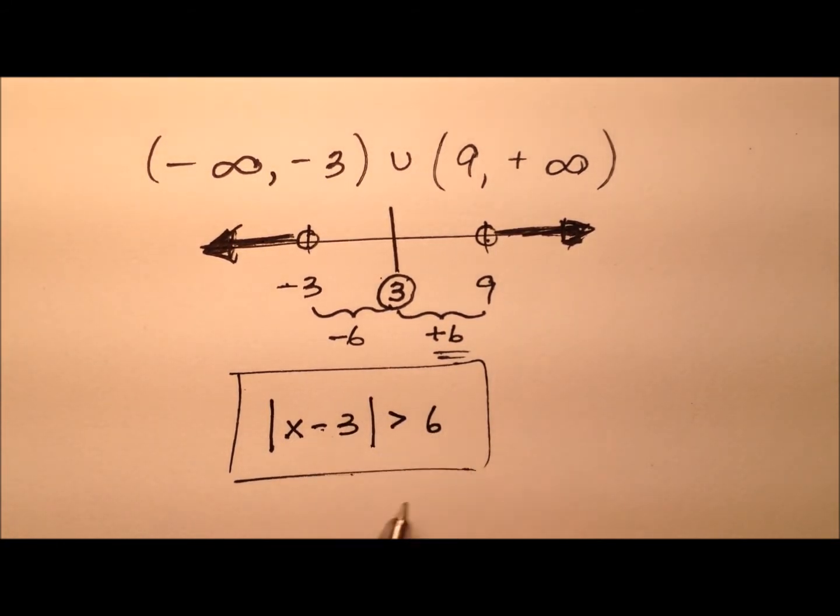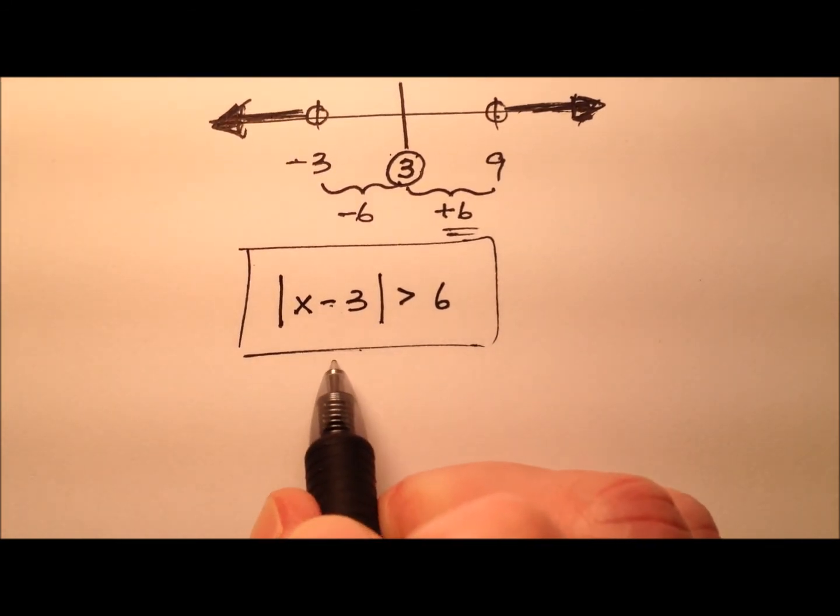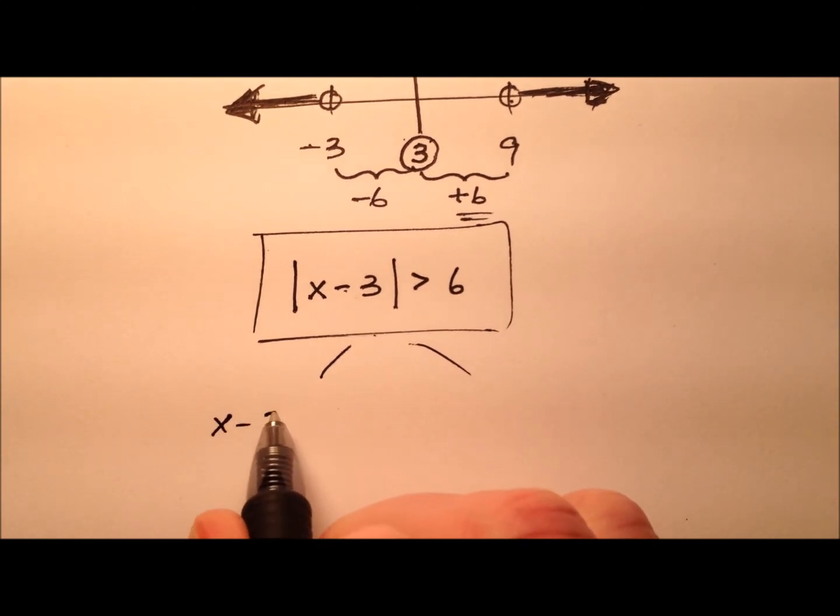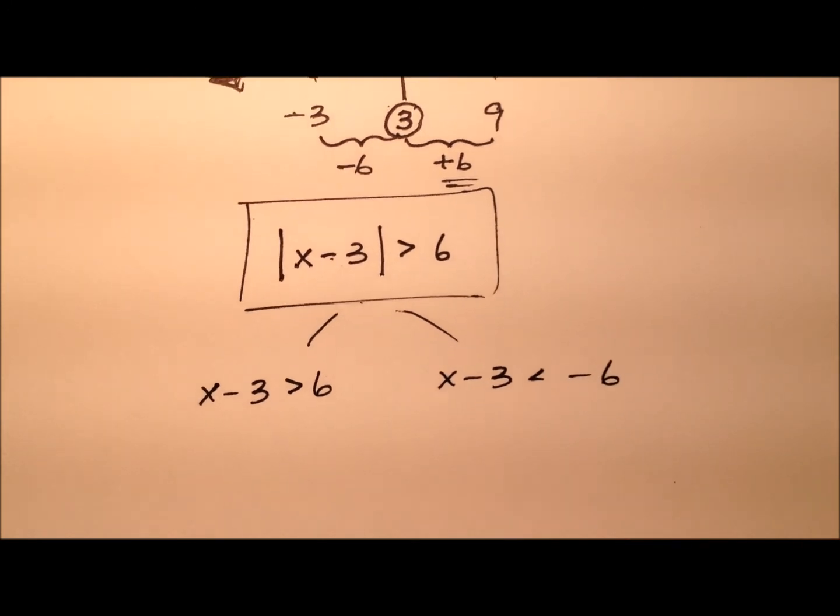But let's go ahead and solve this, and I'll have something else to say just so we can make sure this is right. So if I was to divide this up, it would be x minus 3 is greater than 6, and x minus 3 is less than negative 6.